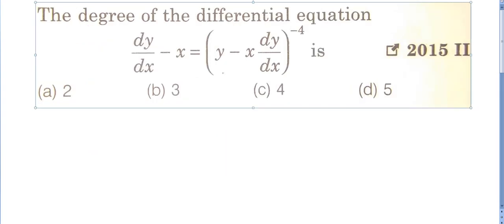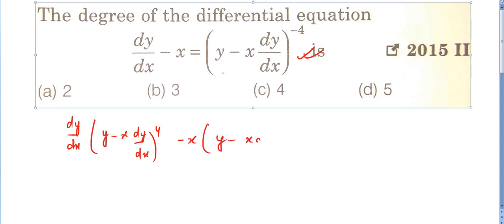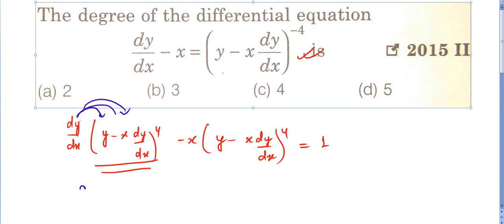Next question: the differential equation dy/dx − x = (y − x)(dy/dx)^(−4). This is straightforward — take the reciprocal of the right-hand side and multiply both sides. You get dy/dx multiplied by (x·dy/dx)^4, minus x·(dy/dx)^4, minus x·(dy/dx)^4. When you expand the bracket (y − x·dy/dx)^4, the highest power of dy/dx inside will be 4, and multiplied by the outer dy/dx gives power 5.